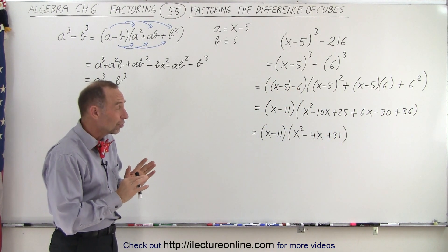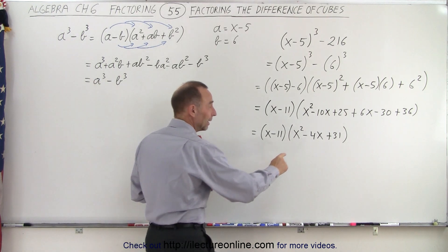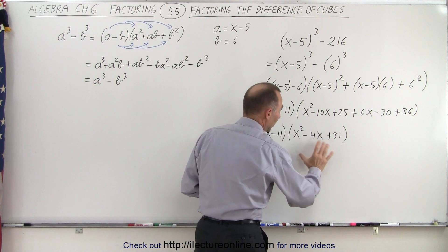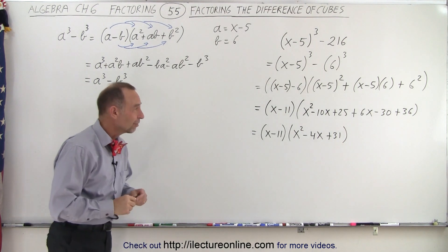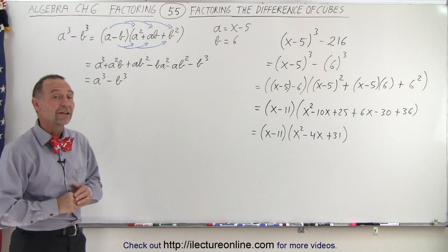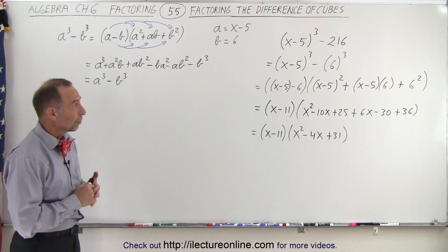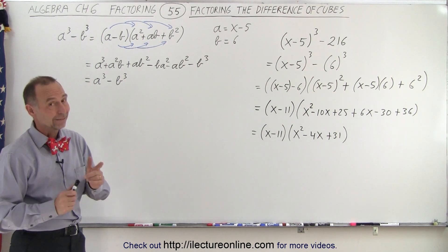Now you may want to make sure that is this perhaps factorable, but in this case it's not because 31 is a prime number, so it doesn't look like that is a factorable trinomial, and that would be the final factored form of our original problem. That is how it's done.